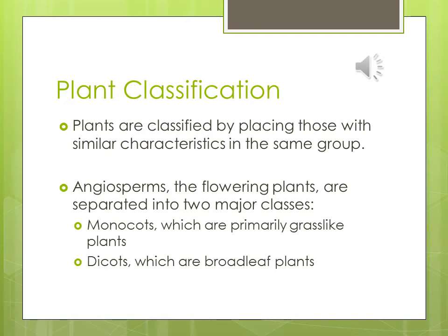Our grasses are considered monocots — these are your grass-like plants. In a couple of weeks when we start talking about pest management for ornamental shrubs, those are our dicots. Even weeds that develop in turf grasses can be dicots — broadleaf weeds, broadleaf plants. We're talking about insects and cultural practices of a monocot plant, or grasses, for this PowerPoint.